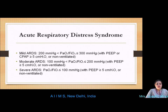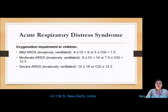ARDS is categorized by severity using the PaO2/FiO2 ratio: mild ARDS when the ratio is greater than 200 but less than or equal to 300 mmHg; moderate when the ratio is greater than 100 but less than or equal to 200 mmHg; and severe when less than 100 mmHg. In children, the oxygenation index (OI) or the oxygen saturation index (OSI) is used for assessing oxygenation impairment.